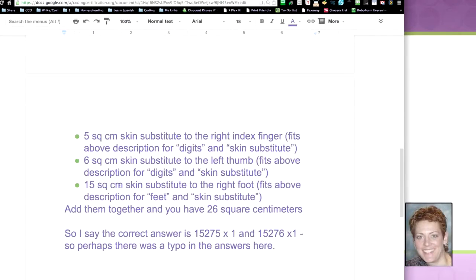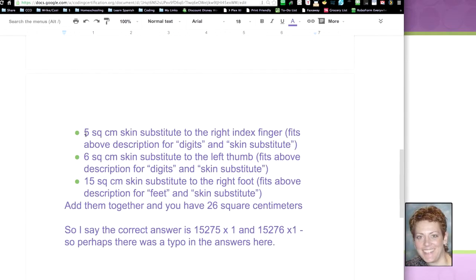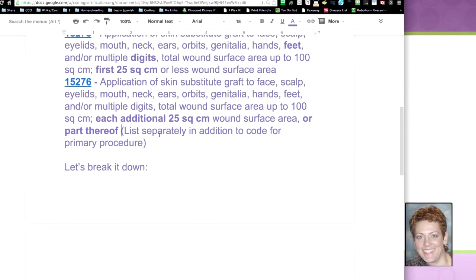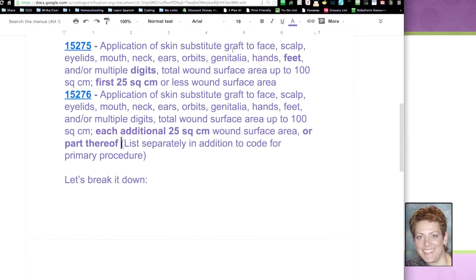When we break it down, we've got 5 square centimeter right index, 6 square centimeter left thumb, 15 square centimeter right foot. These all fit the description of 275 as far as the body areas go because this is face, scalp, eyelids, mouth, neck, ears, orbits, genitalia, hands, feet, and/or multiple digits. So we had digits and we had a foot.